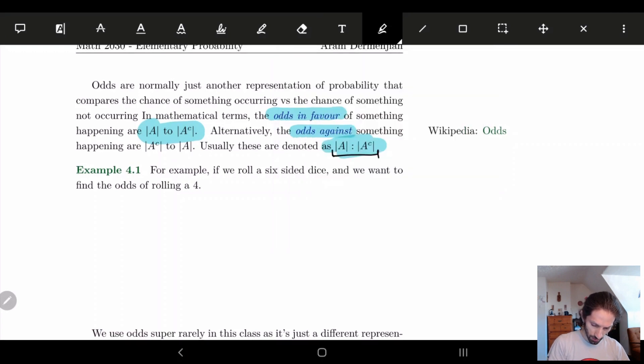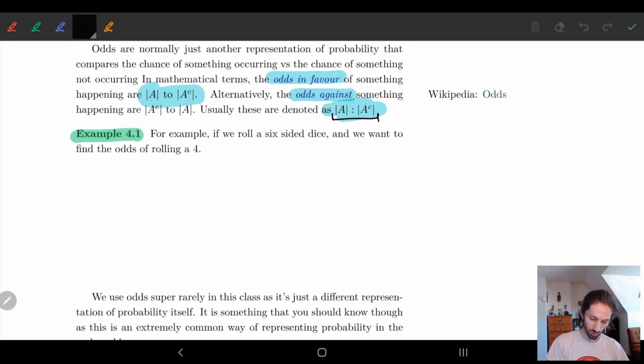So for an example, we're going to roll a six-sided die and look at the odds of rolling a four. For the odds of rolling a four, we know that A equals 4, omega is just all the numbers 1, 2, 3, 4, 5, 6. We also need to figure out what A complement is - this is the probability that the roll doesn't equal four. So this is omega without A, which is 1, 2, 3, 5, 6, so we skip out 4.